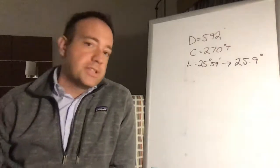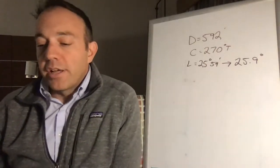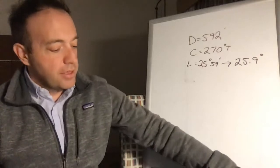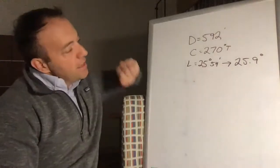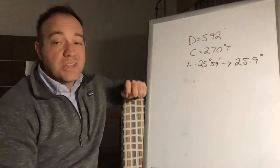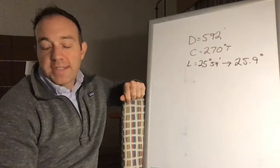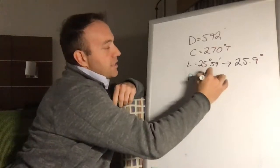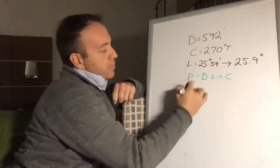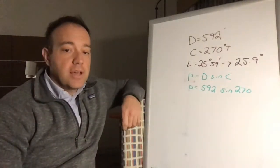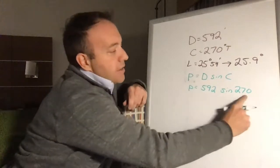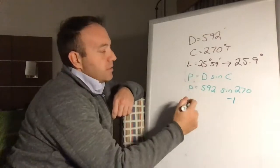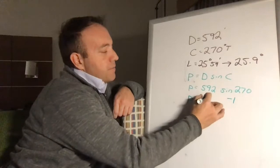We know latitude equals 25 degrees 54 minutes. We need to convert that to decimal degrees: take 54 divided by 60 and you get 25.9 degrees. For the departure formula, P equals D sine C. The sine of 270 is negative one. So our departure P equals negative 592 — the negative indicates we're heading west.